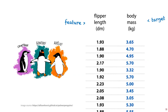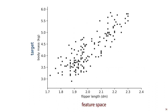To illustrate some basic approaches to this problem, we will use the same dataset as before, but this time we will make flipper length the sole feature, and we will try to predict the body mass. In general, penguins with large flippers should be tall, so we'd expect them to have higher body mass. Note that in this case we have a one-dimensional feature space, which is one axis of our figure, and the target value makes the other axis.